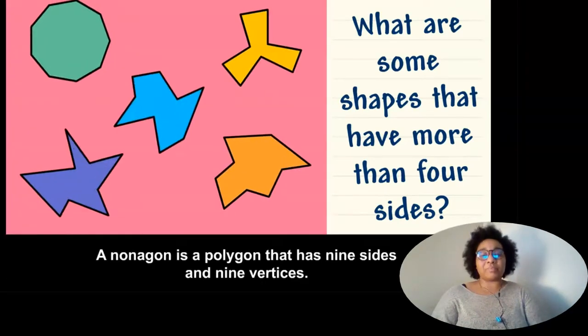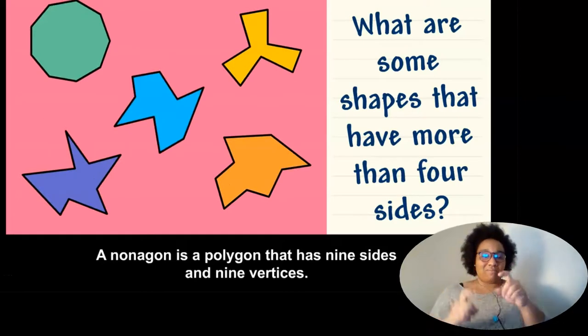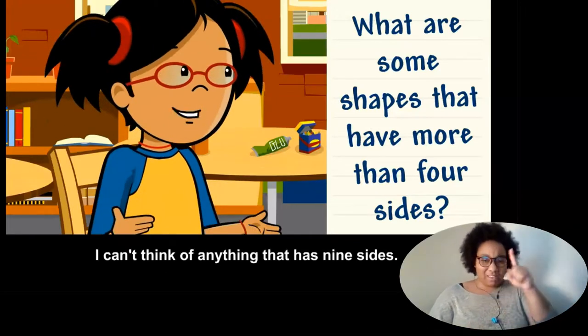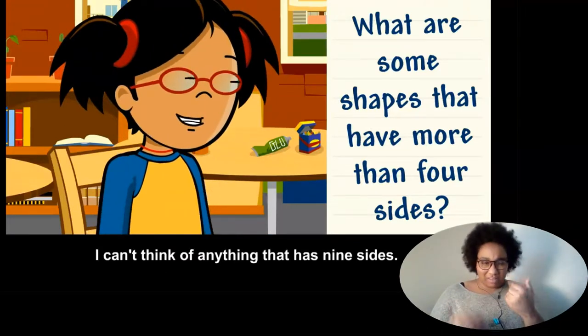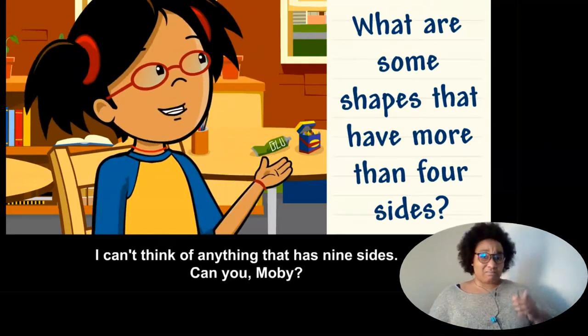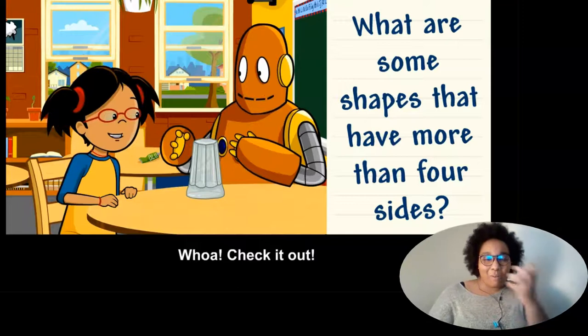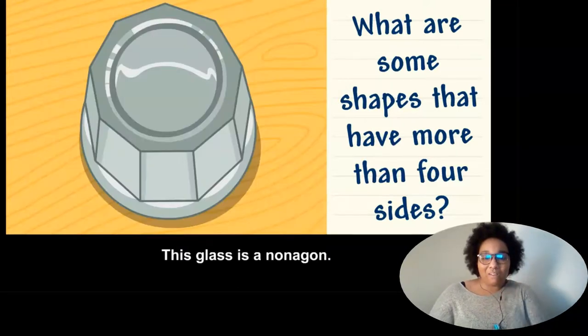A nonagon is a polygon that has nine sides and nine vertices. Hmm, I can't think of anything that has nine sides. Can you, Moby? Whoa, check it out! This glass is a nonagon.